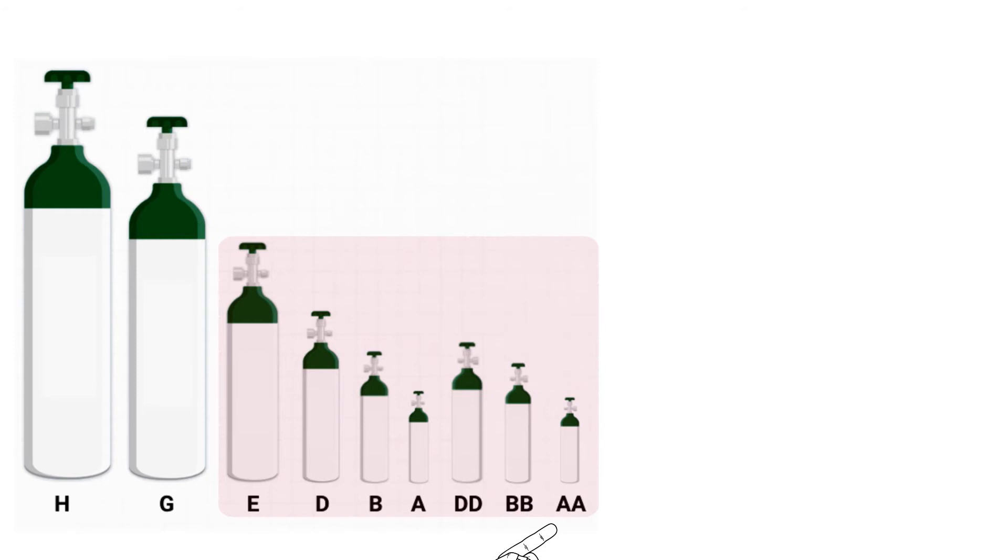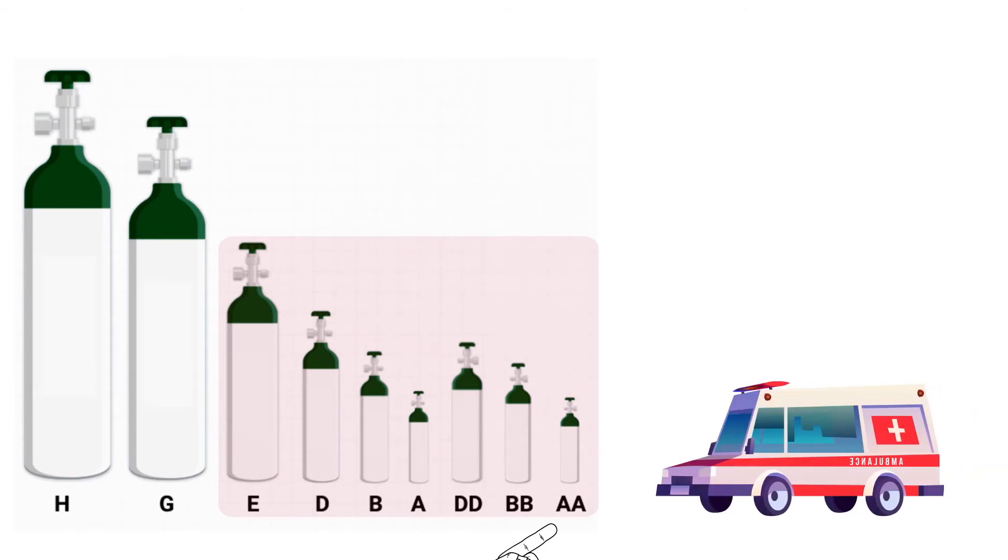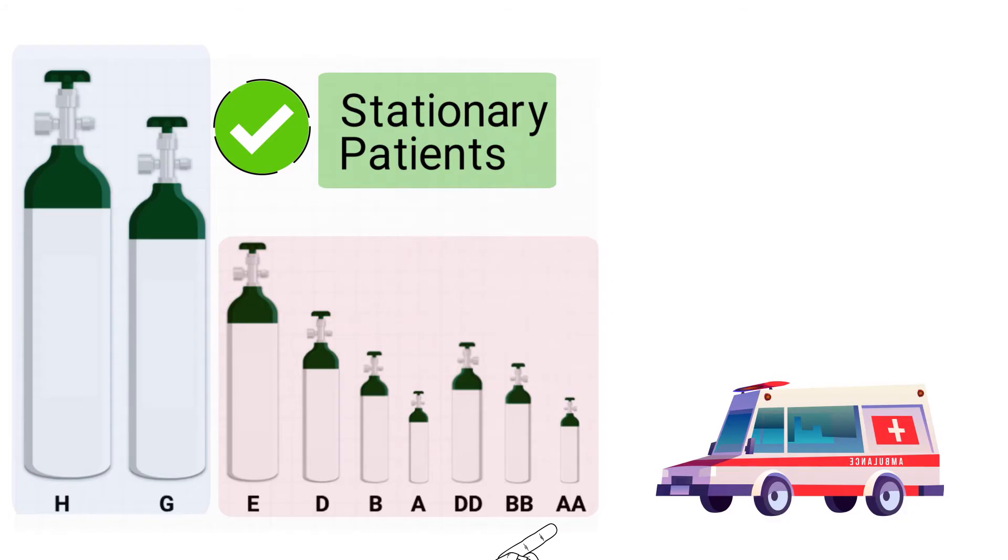Tank sizes E through double A are considered to be small cylinders and are most commonly used during patient transport. Tank sizes H through G are large cylinders and are better suited for stationary patients. With that said, size E cylinders are the most commonly used oxygen tanks, especially in the hospital setting.